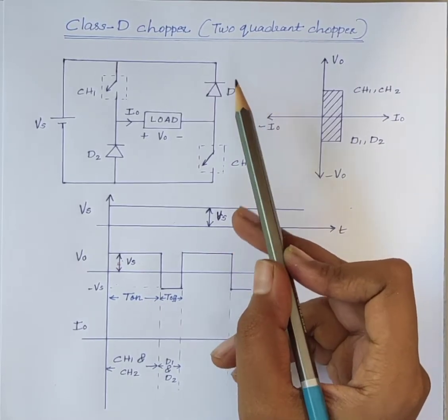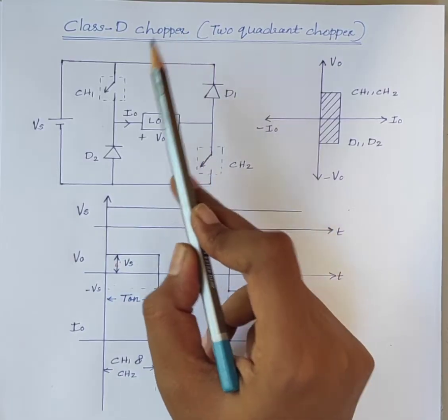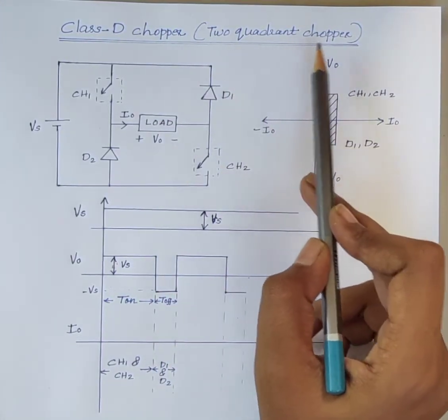Hello students, today we will discuss class D chopper. Class D chopper is also known as two quadrant chopper.